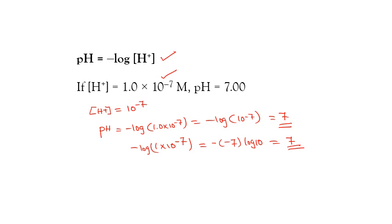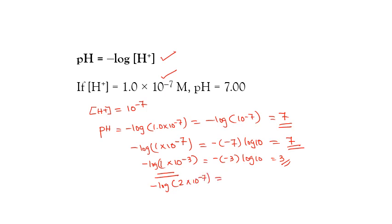This shortcut works only when the coefficient is 1. For example, negative log of 1 × 10⁻³ equals 3. If the coefficient is not 1 — say negative log of 2.something × 10⁻⁷ — you should plug it into the calculator. The answer will fall between 6 and 7. Likewise, if the coefficient is around 3, the answer falls between 2 and 3. Use these shortcuts depending on the situation.